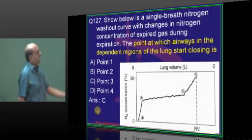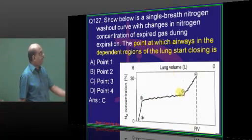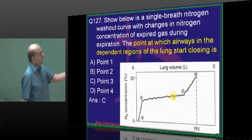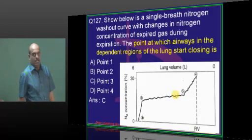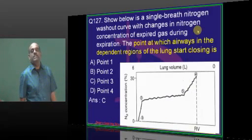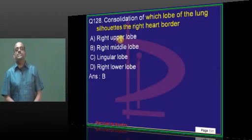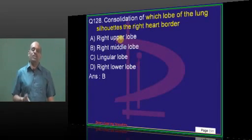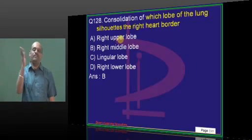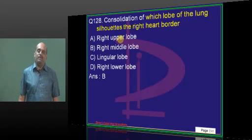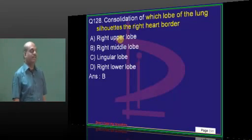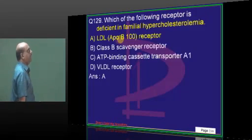This is a typical single breath nitrogen washout test. The point called the closing point — from there the concentration will steeply rise. Silhouette sign, right middle lobe — we had this question in our mock test many times. You should not get it wrong — right middle lobe.